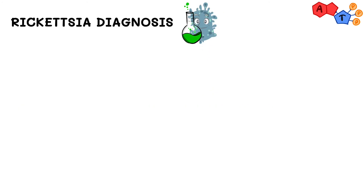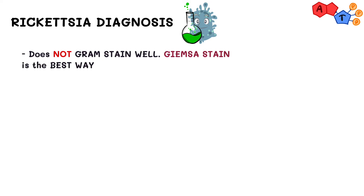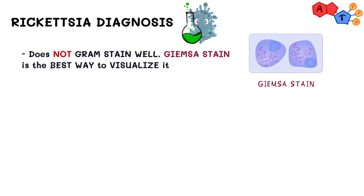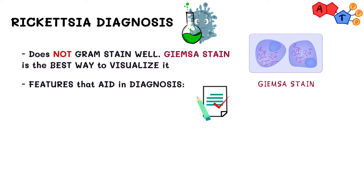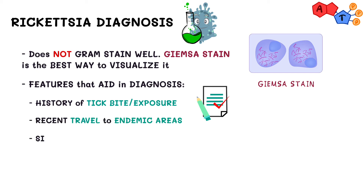How can we diagnose patients with rickettsia? Rickettsia does not gram-stain well, as it is an obligate intracellular bacterium. Giemsa stain is the best way to visualize rickettsia. Early diagnosis is difficult because early signs and symptoms are usually nonspecific or mimic benign viral illnesses. However, there are certain features that aid in making the early diagnosis of rickettsial diseases, including a history of tick bite or exposure, recent travel to endemic areas, and similar illness in family members, co-workers, or family pets, especially dogs.